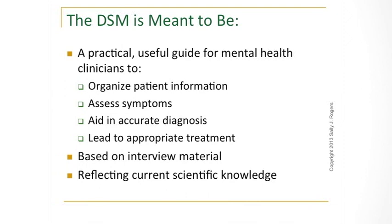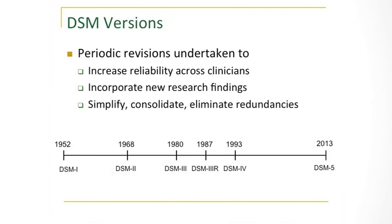It isn't something that is going to map directly onto any particular measure or psychometric testing, and that's a really important point. Even way back in the 1950s, it was meant to reflect current scientific knowledge, and that has changed a lot over the last 60 years. DSM-1 first came out in the 1950s. Prior to that, psychiatric diagnosis was absolutely subjective — there were no criteria, so things could be quite unreliable.